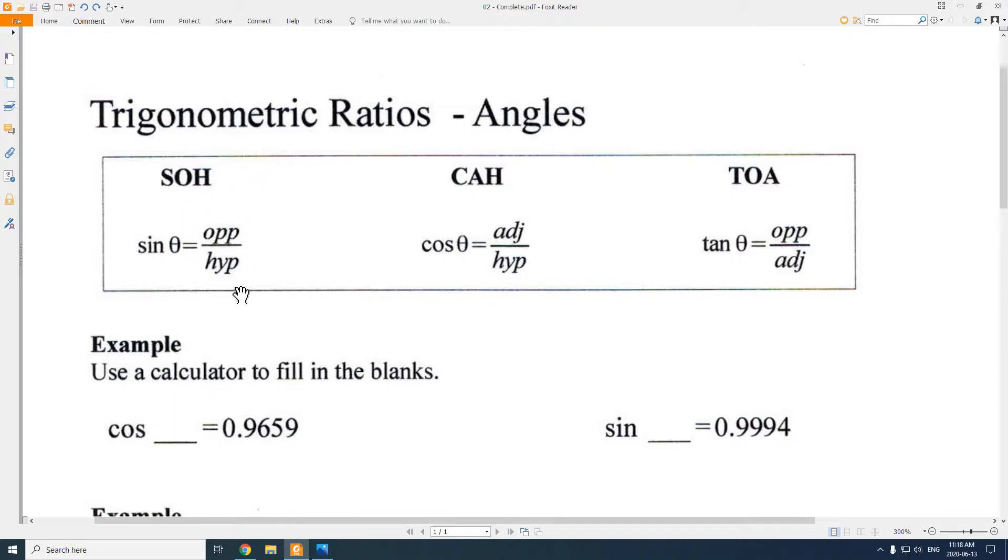So if opposite and hypotenuse were the important sides, then I would use the sine equation, which is really just the sine table. Adjacent and hypotenuse cosine, opposite and adjacent I would use the tan equation or the tan table. Today, we're still looking at these same three equations, the same three tables.